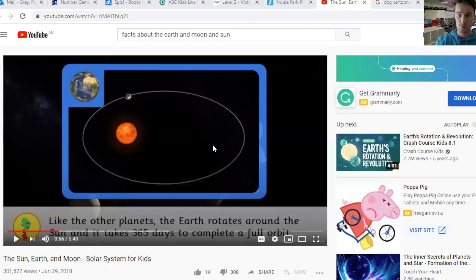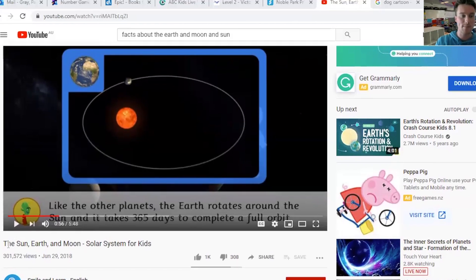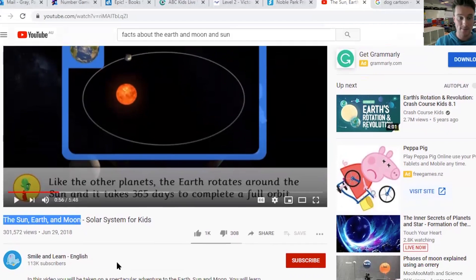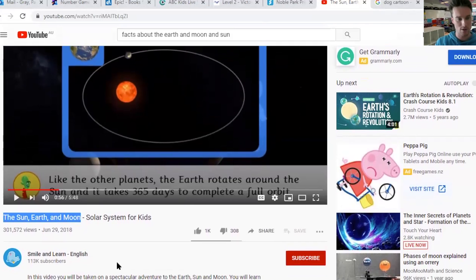Now if you're not sure about how to find the video that we're talking about, you can type this into YouTube. So sorry if you have to write that down or pause the video and write it down and get another screen. So it's a little bit tricky, but you could type in the sun, earth, and moon, solar system for kids. And you know it's the right video because it's from Smile and Learn. That's the channel. So hopefully that helps.